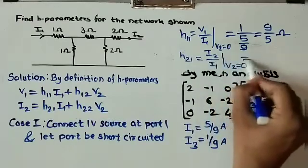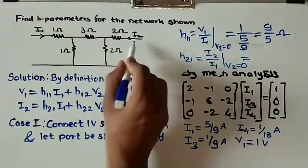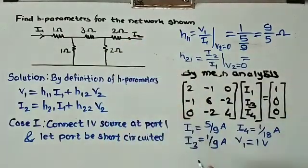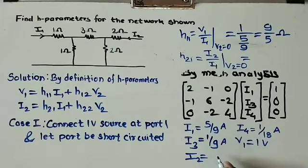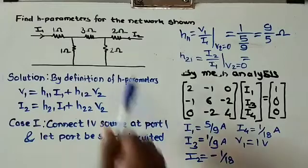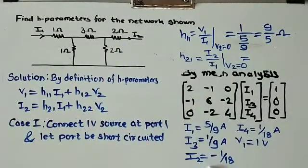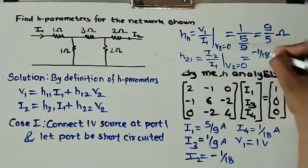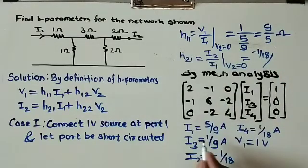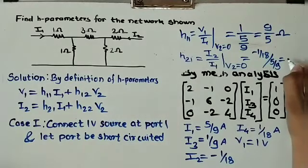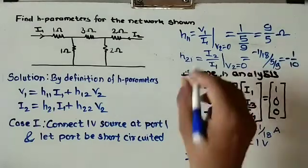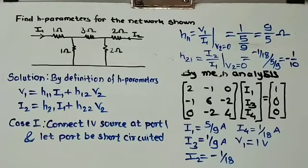For h21, with v2 equals 0: i2 is opposite in direction to i4, so i2 equals minus i4 equals minus 1/18. Then h21 equals i2 over i1 equals (−1/18) divided by (5/9), which gives h21 equals minus 1/10. Since it is a current ratio, it has no unit.